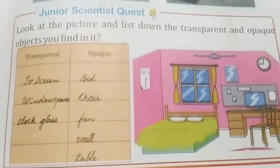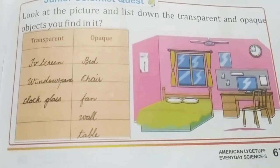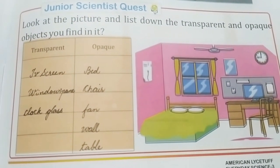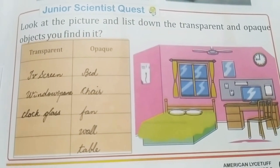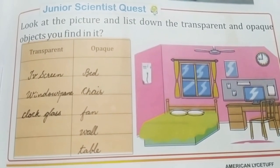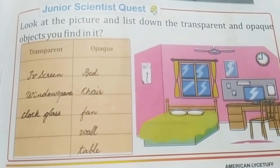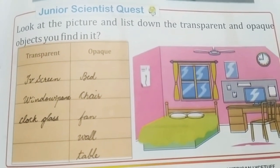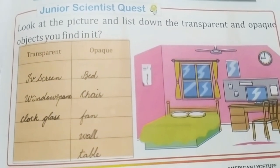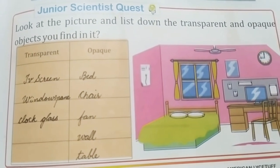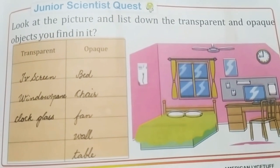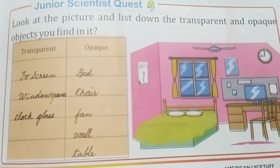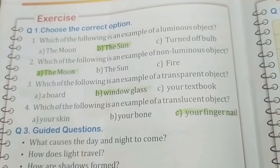Now we will study the Junior Quest on page number 67. They show a picture and ask you to separate transparent and opaque objects. I have separated them out and written the answers. Transparent objects are the TV screen, the window pane, and a glass clock. The opaque objects are the bed, chair, fan, wall, and table.